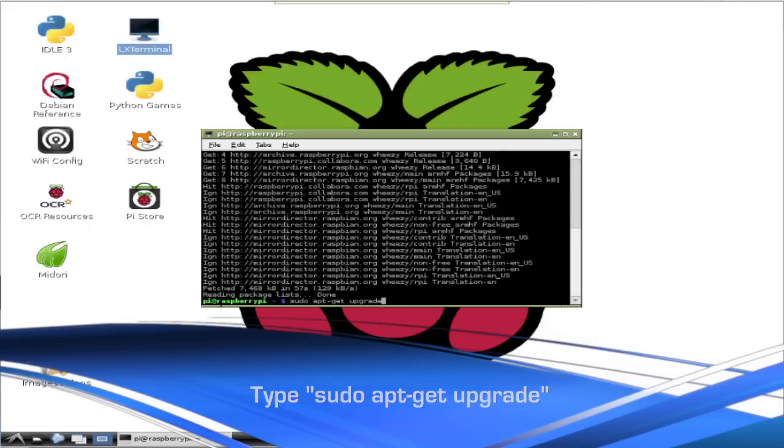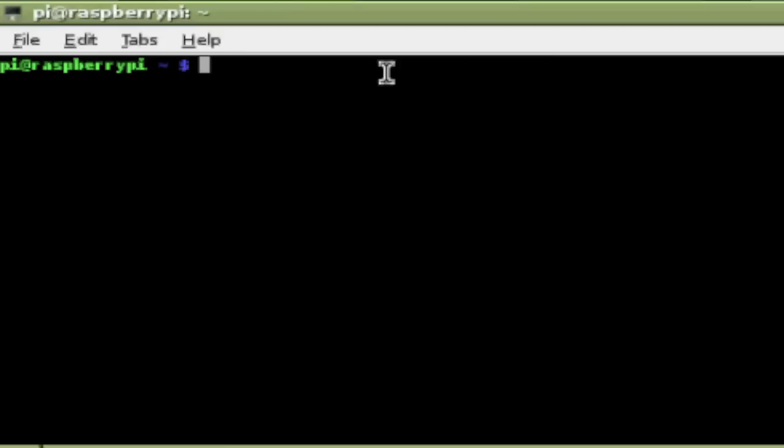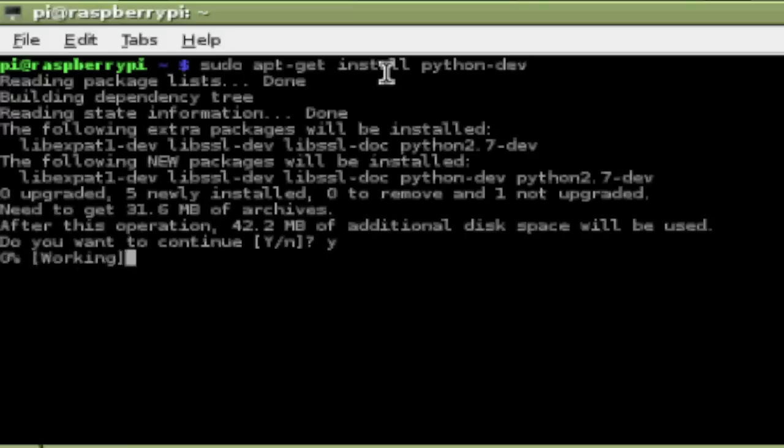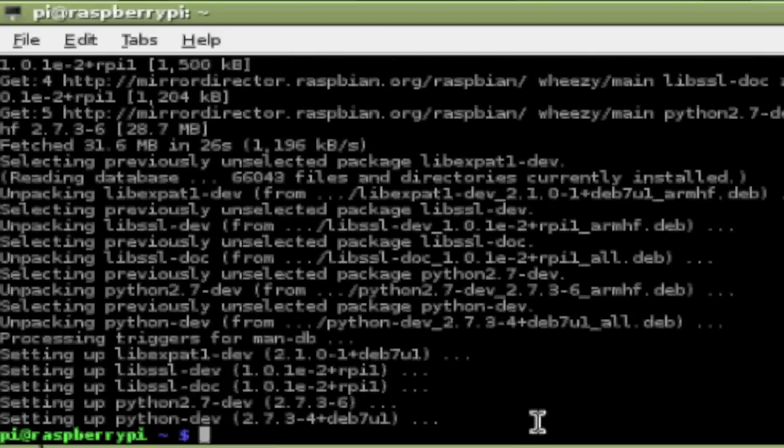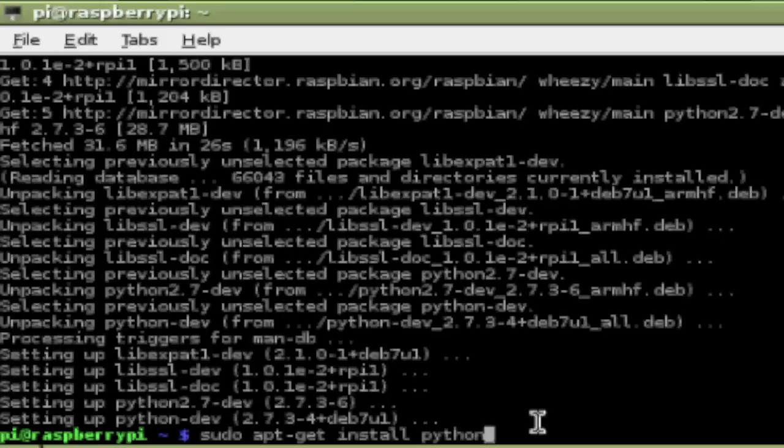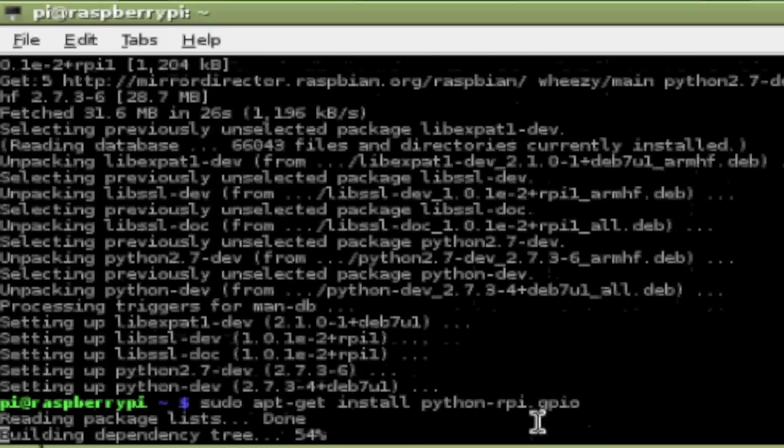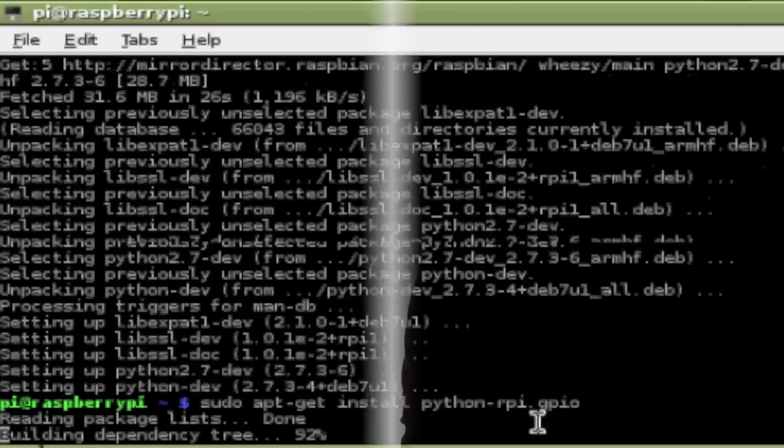Now that the Pi is updated, let's be sure the Python development kit is installed. You type sudo apt-get install python-dev. Now when that finishes, we need to install the rpi.gpio. To do that, you type in sudo apt-get install space python dash rpi.gpio. Then you'll be prompted to enter y to confirm the install.